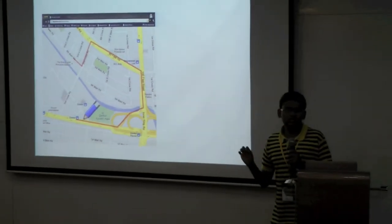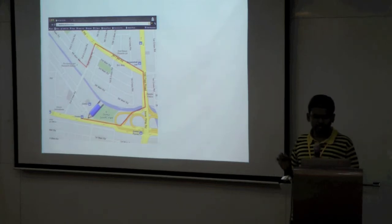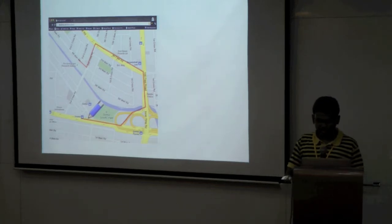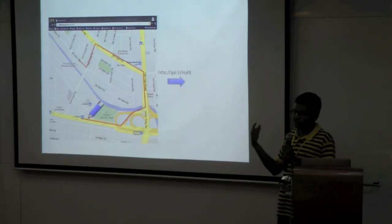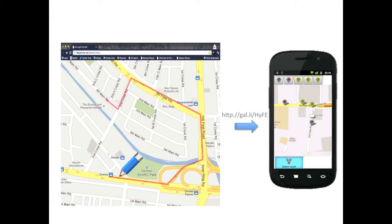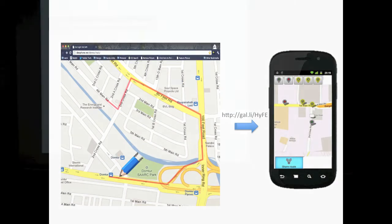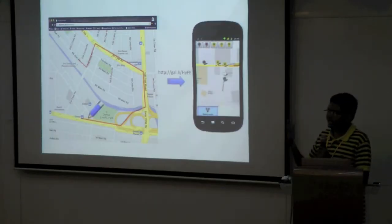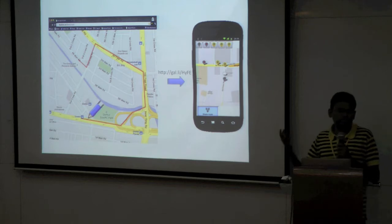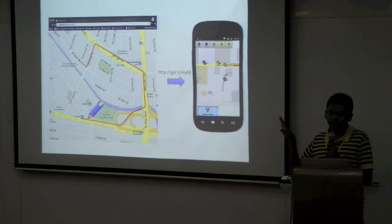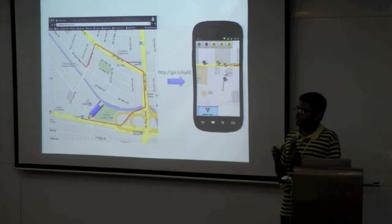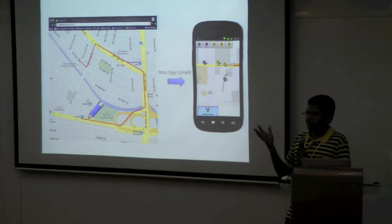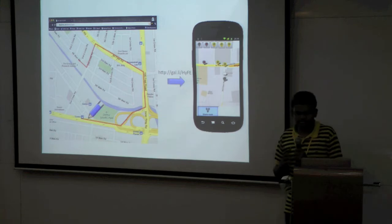There should be a tool where I can draw simply over a map canvas, get a shareable link, and send an SMS to my friend who in turn will use his mobile to find the map. This solution seems to be the core idea.